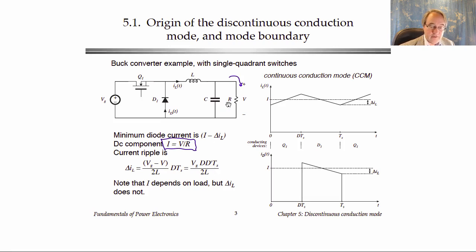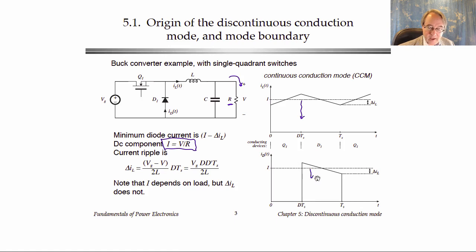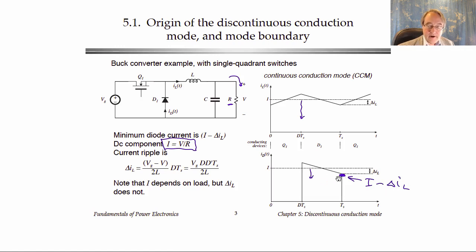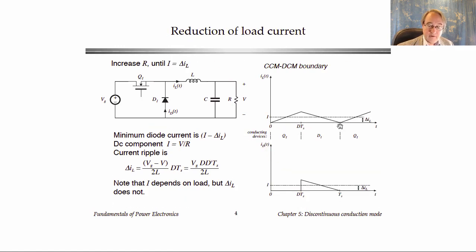What happens if we increase the value of R, or if the load suddenly needs less current? That will make the DC component capital I go down, but it won't change the ripple. What matters here is the effect on the diode. When the diode is on, it conducts the inductor current, and the minimum diode current occurs at the end of the switching period, equal to capital I minus delta I. So the diode current must stay positive, and the minimum diode current is actually less than capital I.